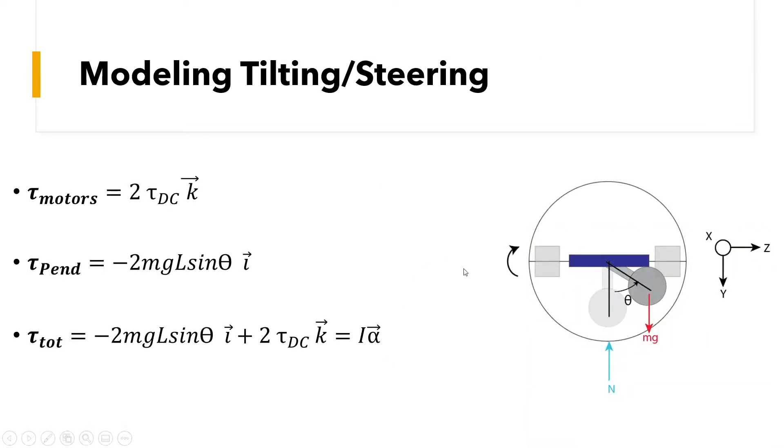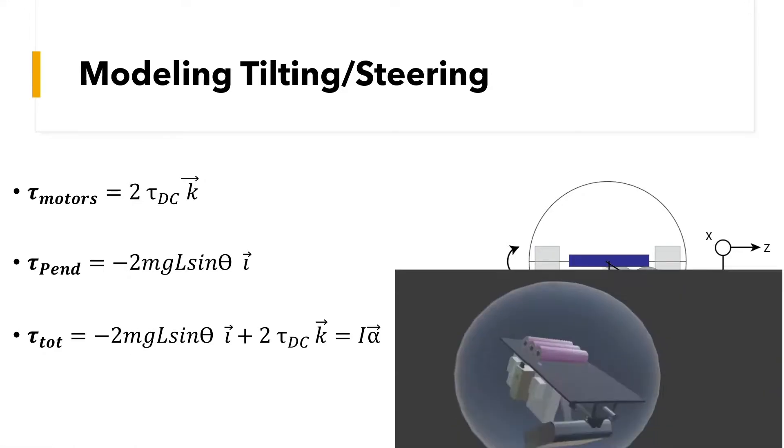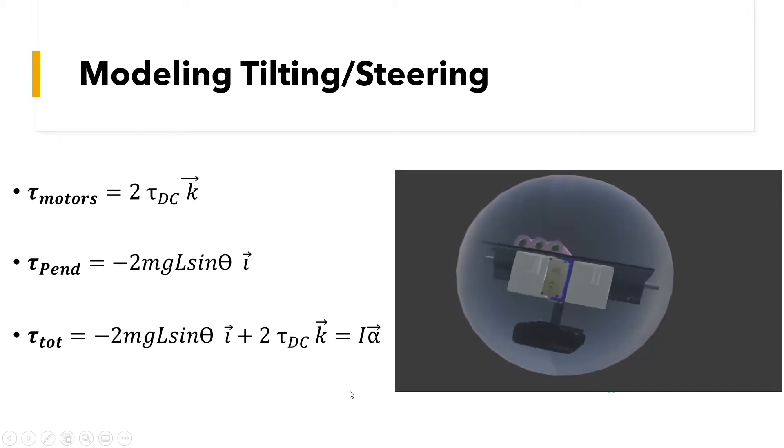As for the tilting and steering modeling, we see that again when shifting the pendulum, the center of mass will shift which would cause a torque, and we can see the equation that relates how much shifting the angle and the mass and the length of the pendulum affect the total torque that would cause a rotation.